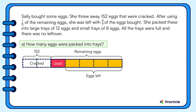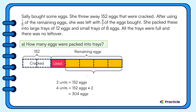This part of our model represents the eggs packed into trays. Sally threw some eggs, used some eggs, and then packed the rest into trays. Let's find the value of the four units. We know two units represent 152 eggs, and since four units is twice that, we multiply 152 by 2 to get 304. So 304 eggs were packed into trays.